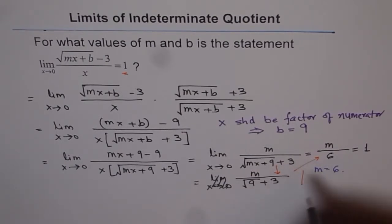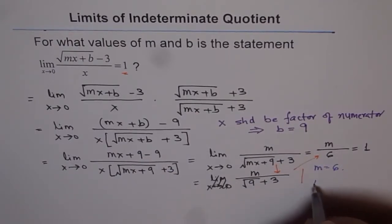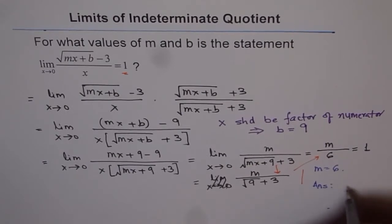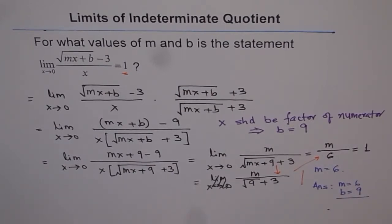So therefore, we know that m should be 6 and b should be 9. So these are the two values. So our answer is m equals to 6 and b equals to 9. So I'd like you to go through this and understand what are we trying to do.